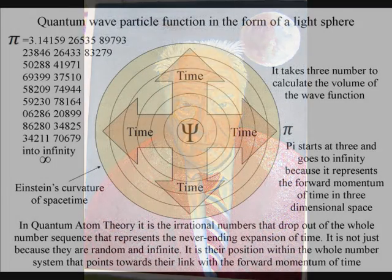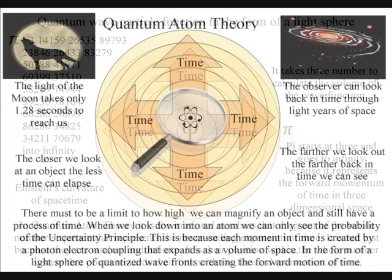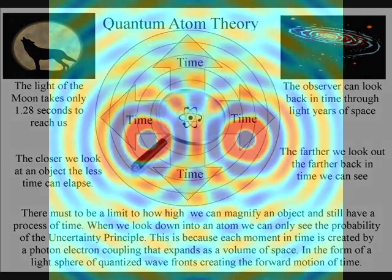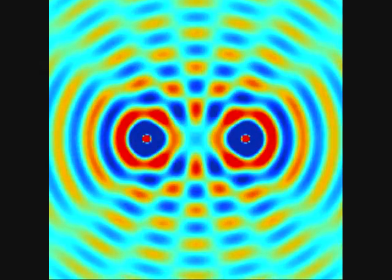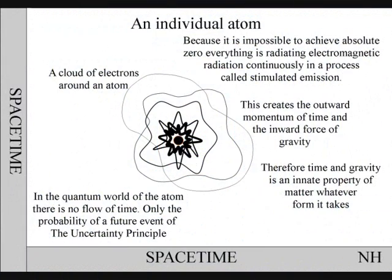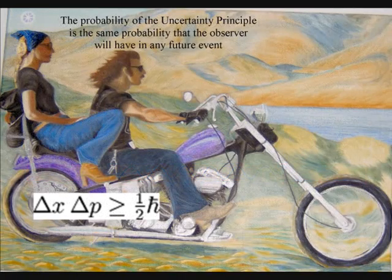The symmetry and geometry of time is the key to understanding quantum mechanics. When we look down into an atom, we can see time-dependent quantum mechanics when the atoms bond together, forming their own spacetime geometry. But when we zoom in on an individual atom, we find time-independent quantum mechanics, and there is no flow or arrow of time — all we have is probability. The probability of the uncertainty principle is the same probability that the observer will have with any future event.